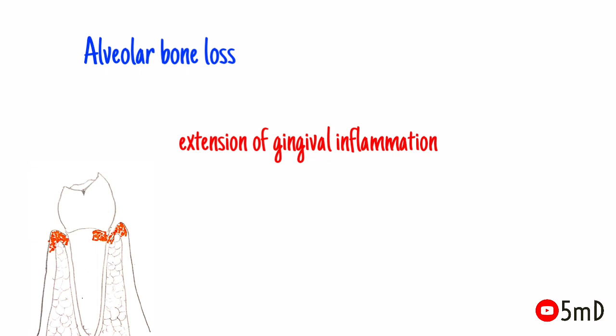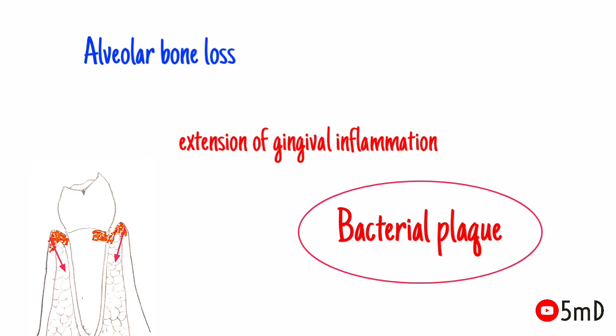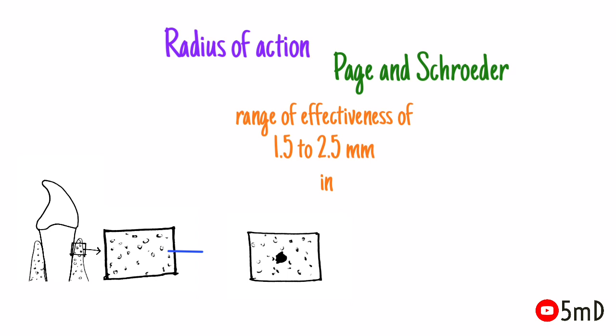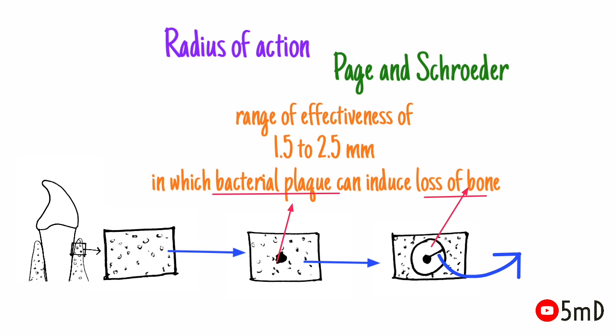The main cause of alveolar bone destruction is extension of gingival inflammation, with bacterial plaque being the main culprit. There is a main concept to remember: radius of action. It is suggested to be 1.5 mm to 2.5 mm as the range of effectiveness of bacterial plaque, within which it can induce bone loss. Beyond 2.5 mm of plaque, there is no effect on bone.